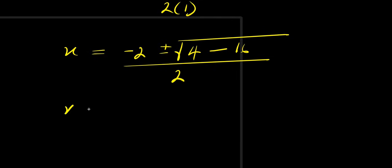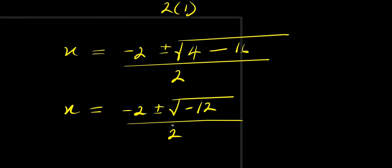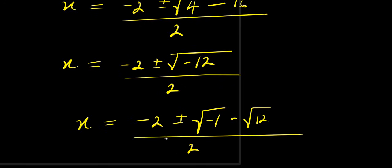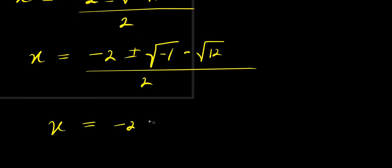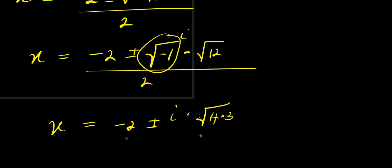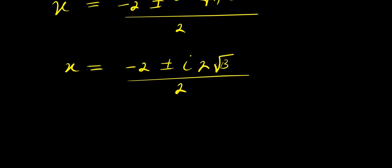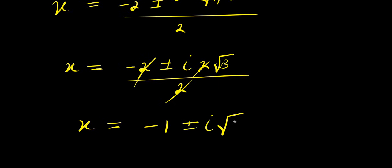So from here, we have x equals negative 2 plus or minus square root of 4 minus 16, divided by 2. That gives x equals negative 2 plus or minus square root of negative 12, divided by 2. We write this as negative 2 plus or minus square root of negative 1 times square root of 12, divided by 2. Since 12 equals 4 times 3, we have x equals negative 2 plus or minus 2i root 3, divided by 2. Simplifying, x equals negative 1 plus or minus i root 3.